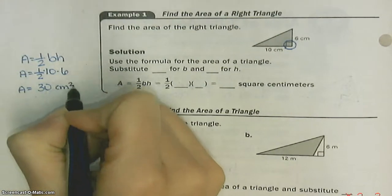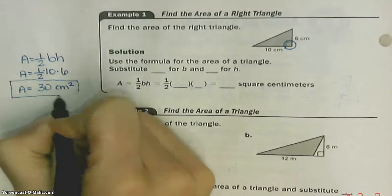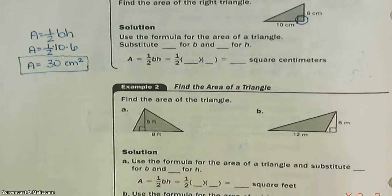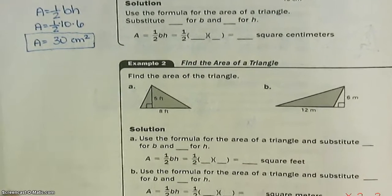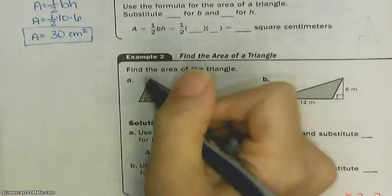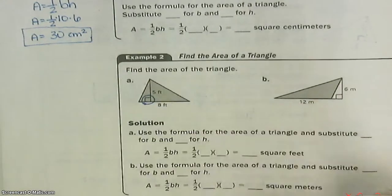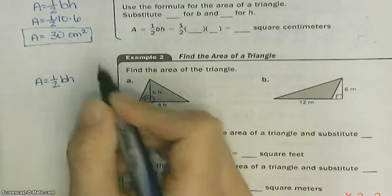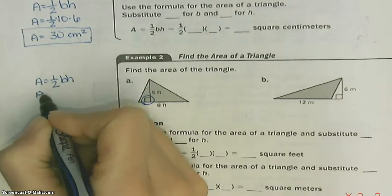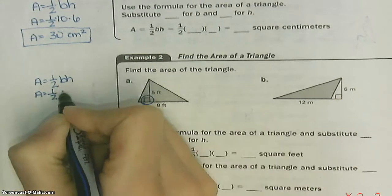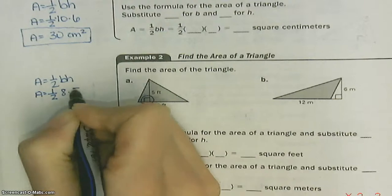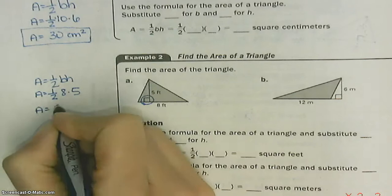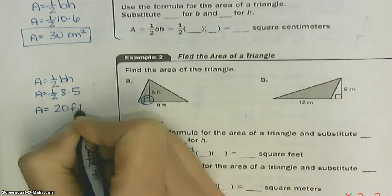Don't forget your units. Find the area of the triangle — circle this right angle. That shows you where your base and your height are. Write your formula; step number one is always to write your formula, because the formulas get more complicated. The base is eight and the height is five. Half of eight is four; four times five is twenty. Twenty feet squared.